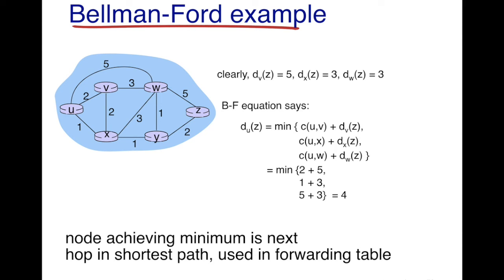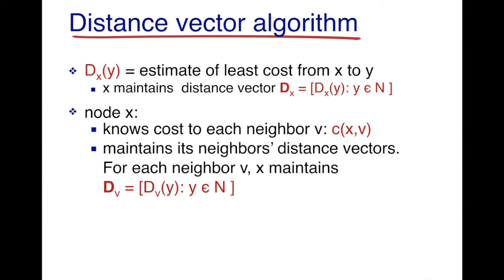This is how the Bellman-Ford equation works, and it is at the heart of the distance vector algorithm. In the distance vector algorithm, the goal is to find the least cost path from a node to another node. It's a decentralized algorithm where every node tries to determine its cost to every other node independently. Capital DXY is the estimate of the least cost path from x to y, and as time passes this estimate gets refined until it converges to the actual least cost value.